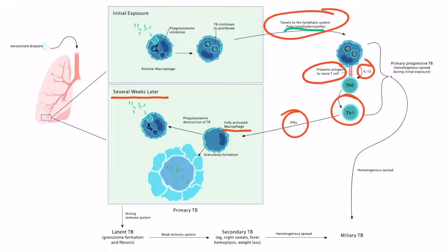Several weeks later, fully activated macrophages perform two important functions: first, they form fully acidified phagolysosomes capable of destroying the pathogen; and second, they form granulomas that wall off the infection. So phagolysosome destruction and granuloma formation both occur.